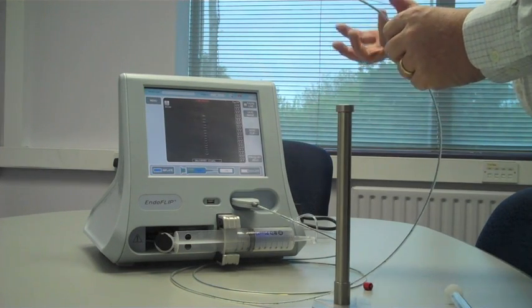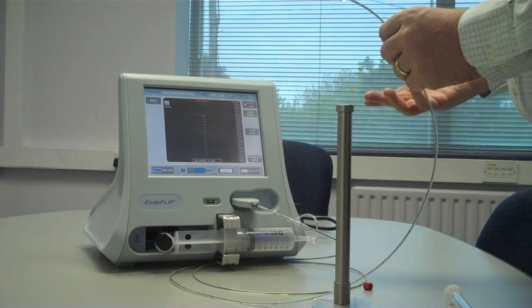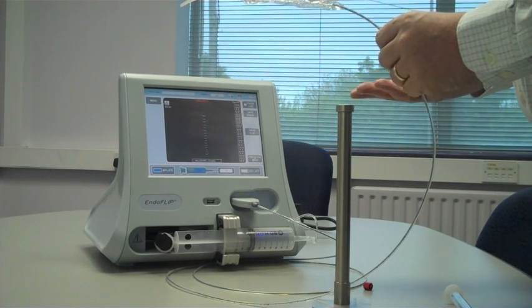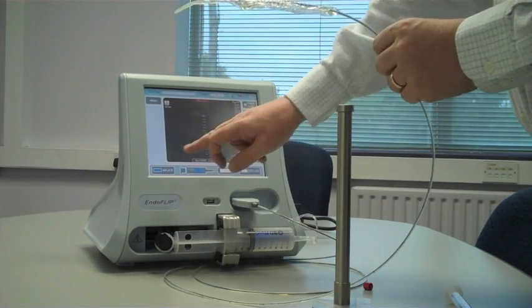The system is very simple to use. You want to inflate to the desired volume. Typically, we inflate to 30 ml when we're doing a lap band, for instance, or measuring the GEJ compliance. So we just hit inflate.